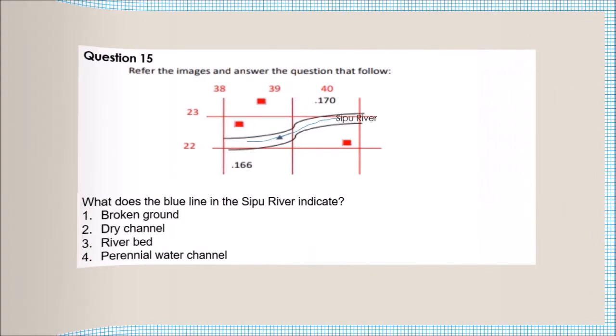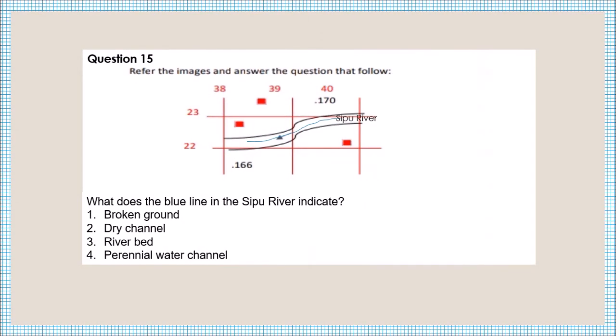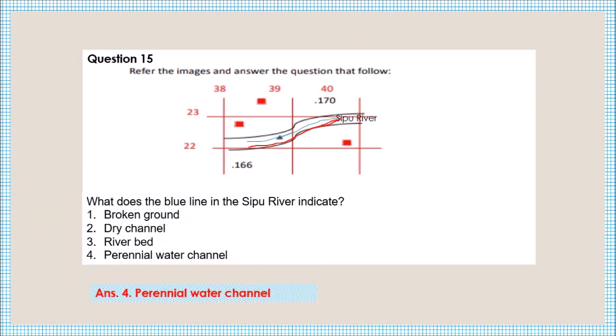Question number fifteen: what does the blue line in the Sipu river indicate? You can see the blue line drawn here. This indicates a perennial water channel.